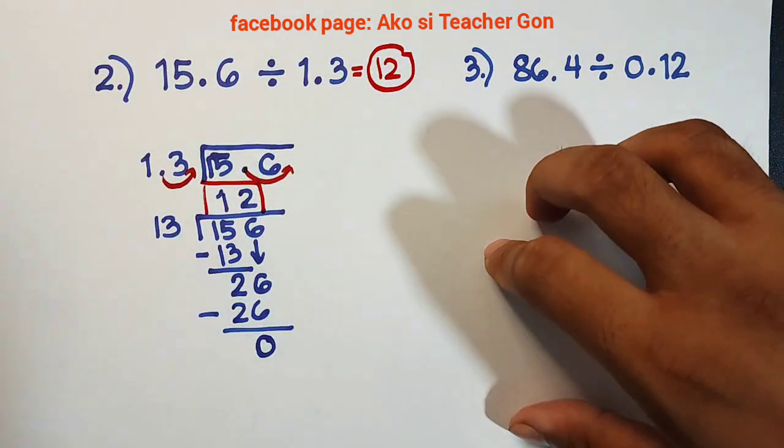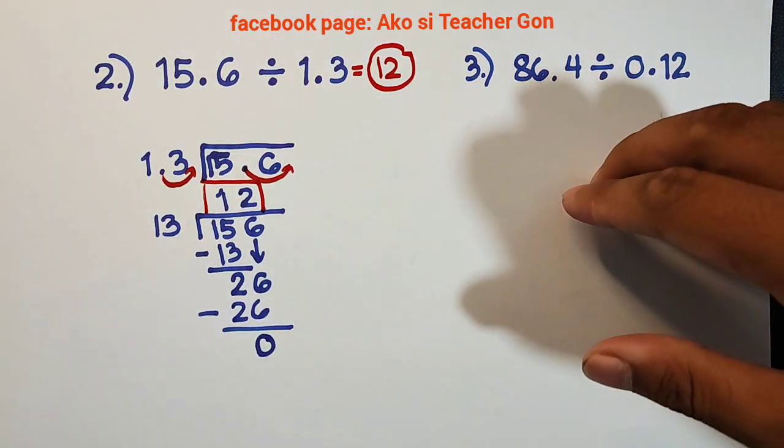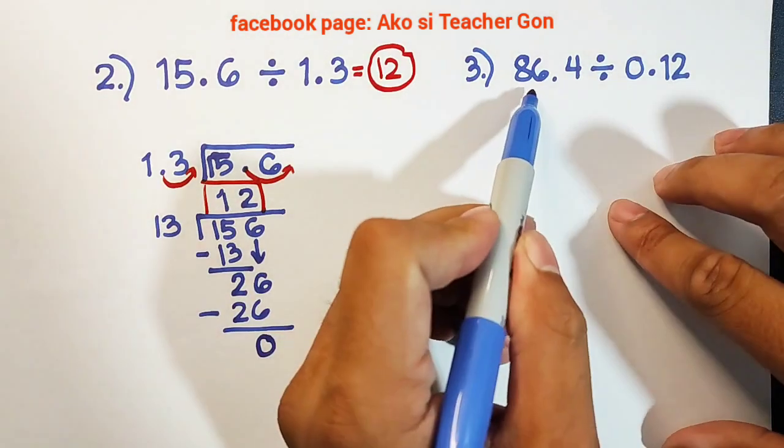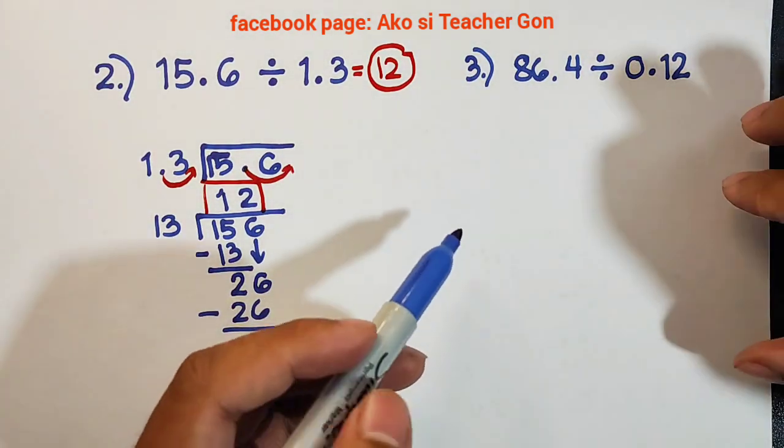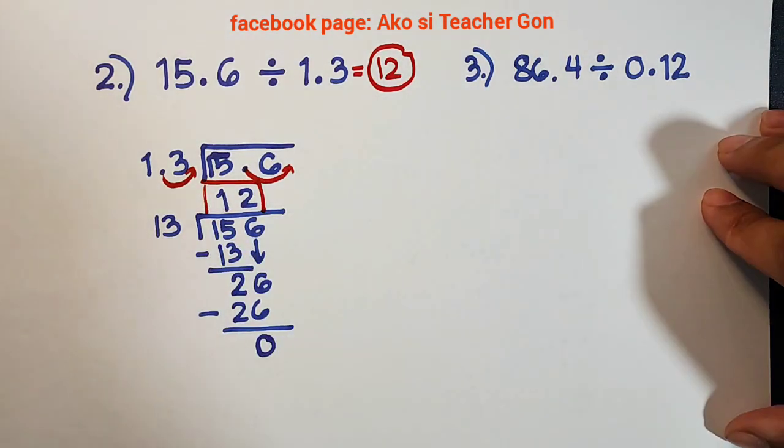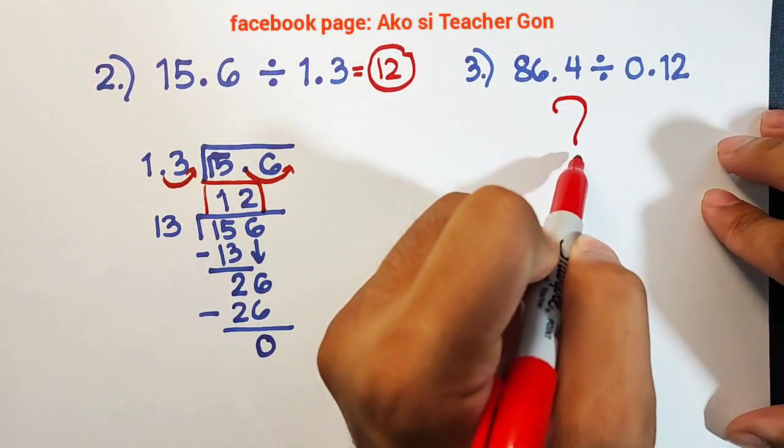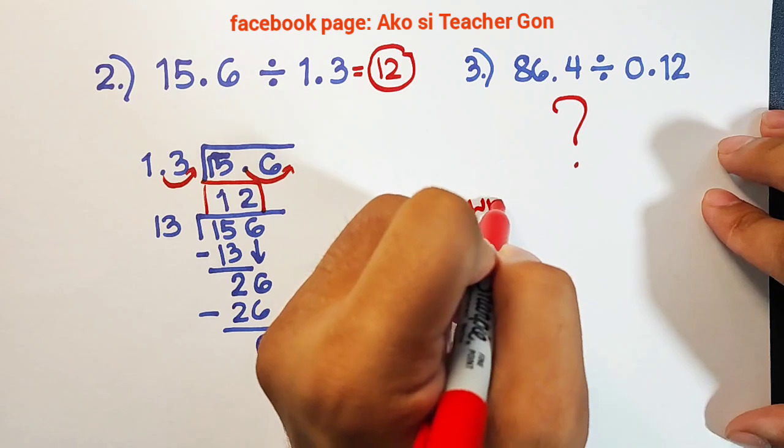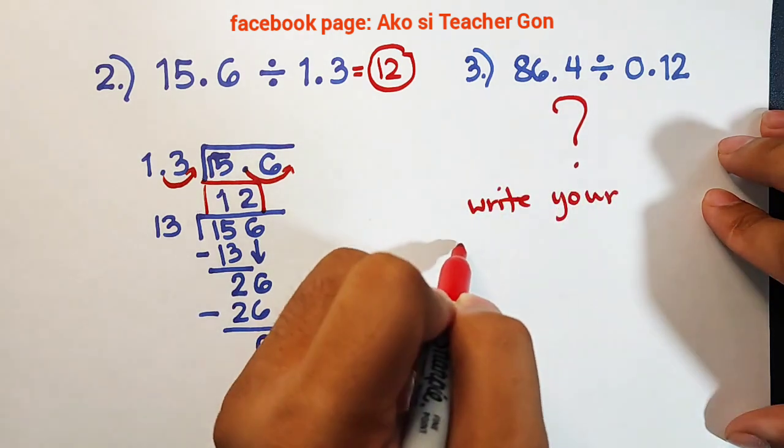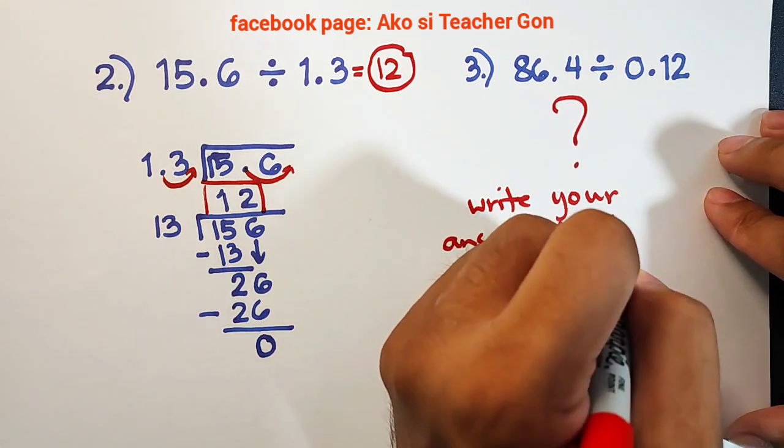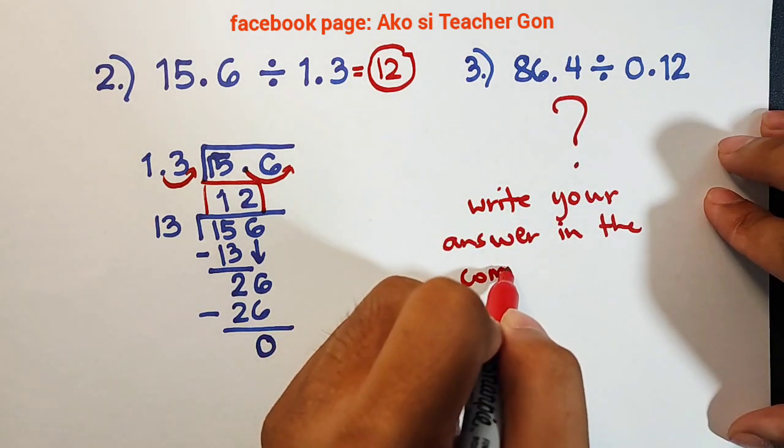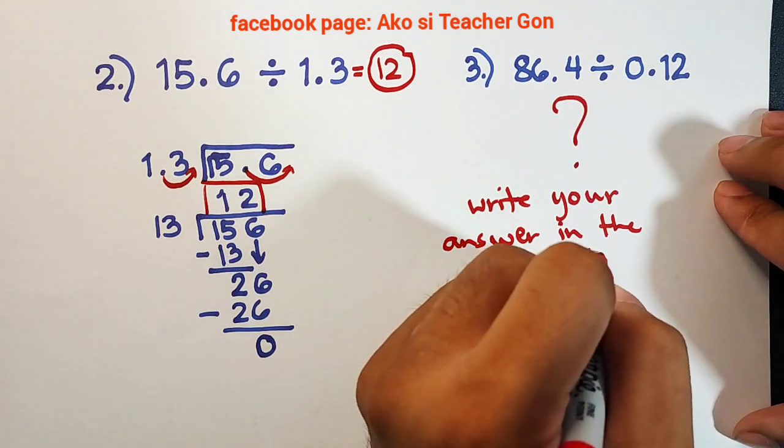So right now guys, we are done with our discussion. For number 3, we have 86.4 divided by 0.12. This is your activity. And I hope that I can see your answer within our comment section. Write your answer in the comment section.